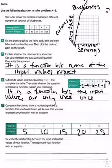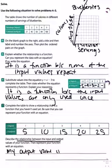It asks you to find the rate of change. That's what it means when it says describe the relationship between the input and output values. So my input and my output are related. My output value is 5 times my input.